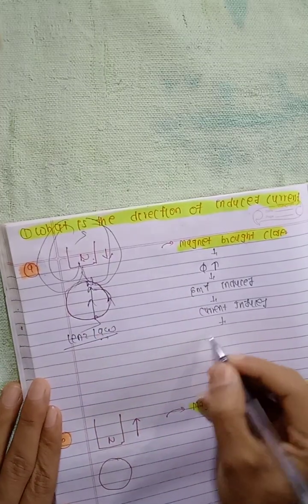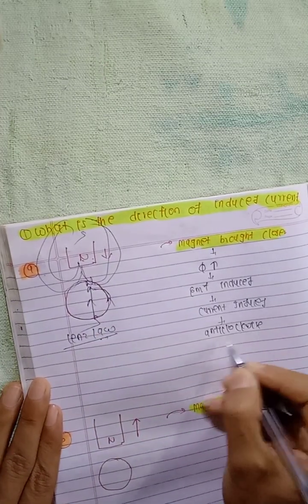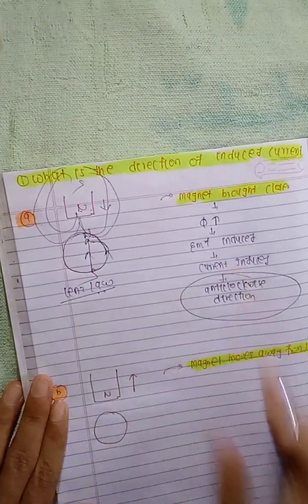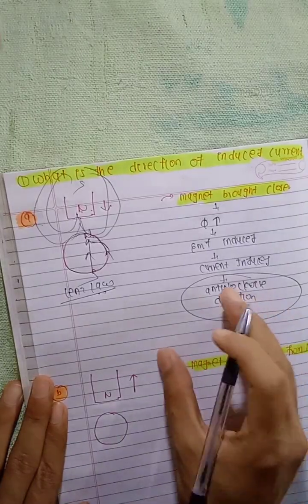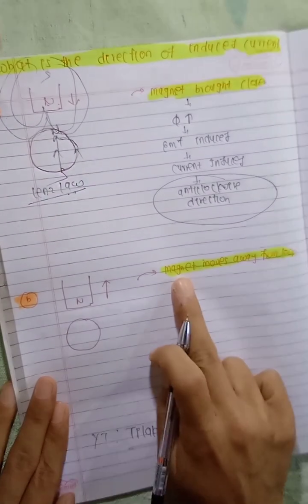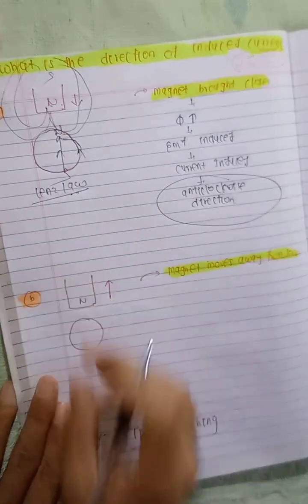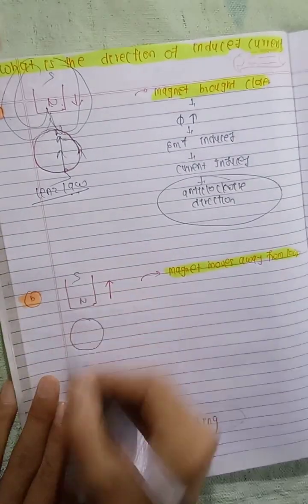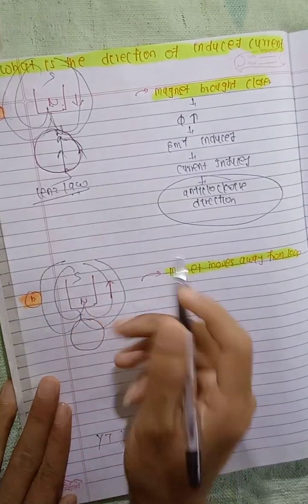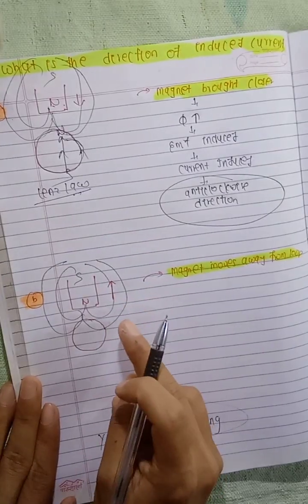What is the anti-clockwise direction? The induced current is in the anti-clockwise direction. This is the second question: the magnet moves away from the loop. This circle loop has a magnet, and these are the magnetic field lines.